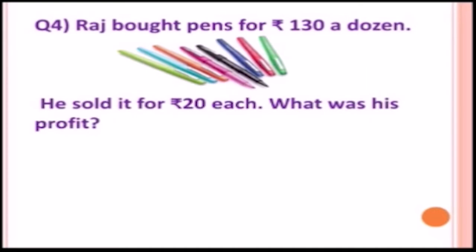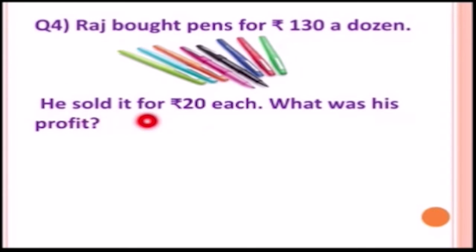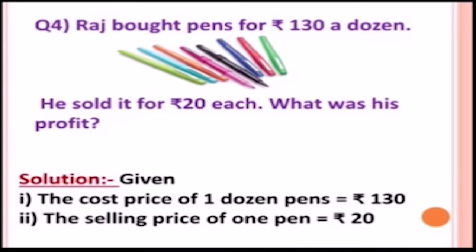Question number four: Raj bought pens for rupees one hundred thirty a dozen and sold them for rupees twenty each. What was his profit? The cost price of one dozen pens is rupees one hundred thirty, and the selling price of one pen is rupees twenty.